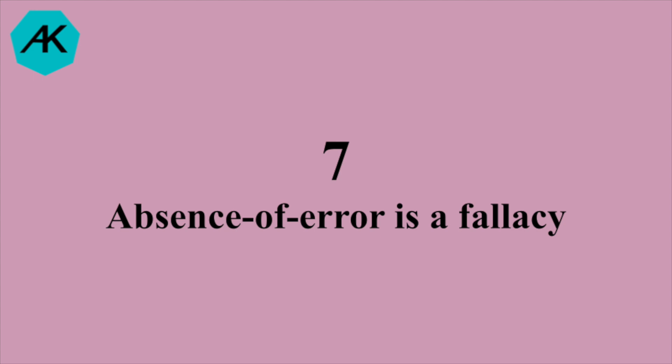The last and seventh principle of software testing is absence of an error is a fallacy. That means even if you run a lot of tests and do not catch any errors, that doesn't assure that the software or system is good to release or that there are no defects. This is quite similar to the first and second principles: the first principle is that testing shows defects and does not confirm their absence, and the second is that exhaustive testing is impossible. So remember, if your software does not show any defects, that does not assure there are no errors in it.